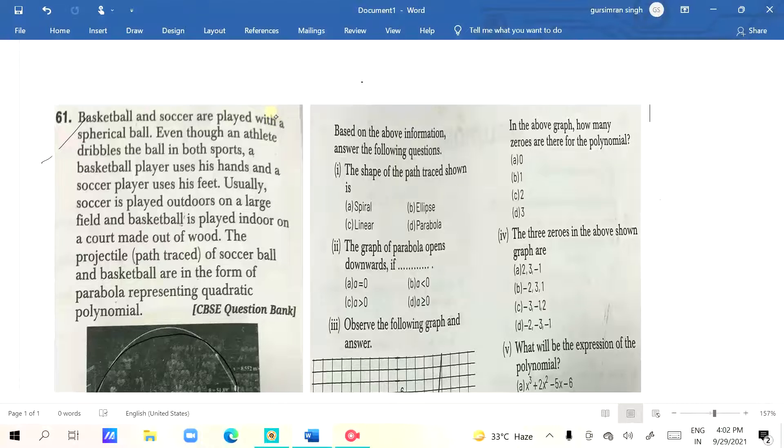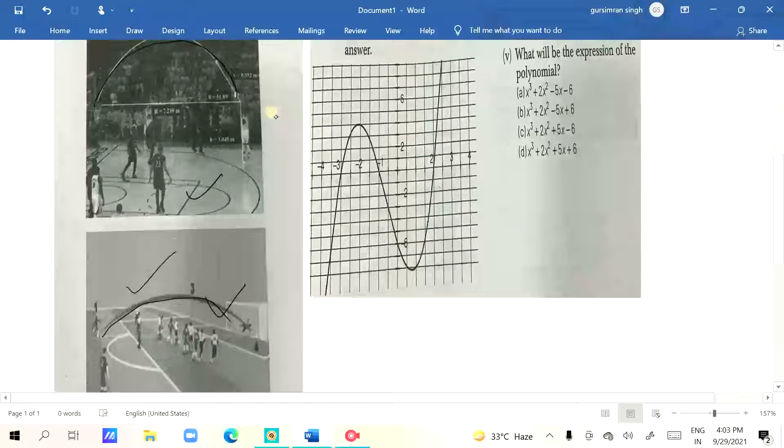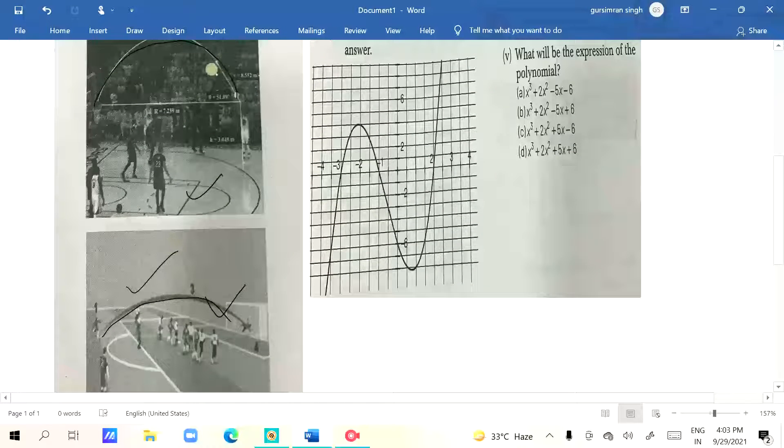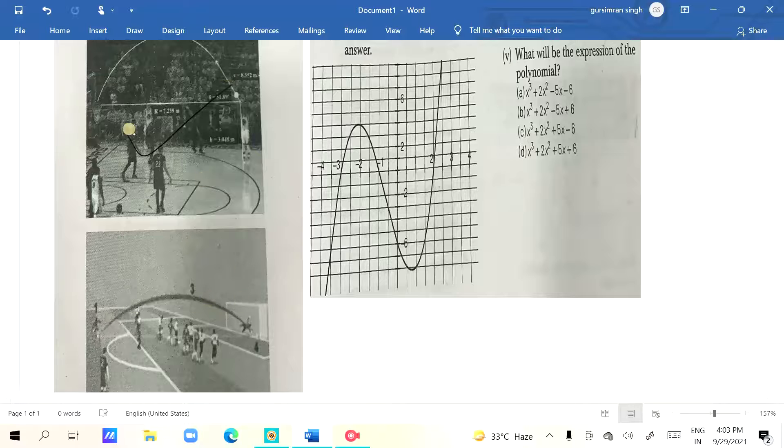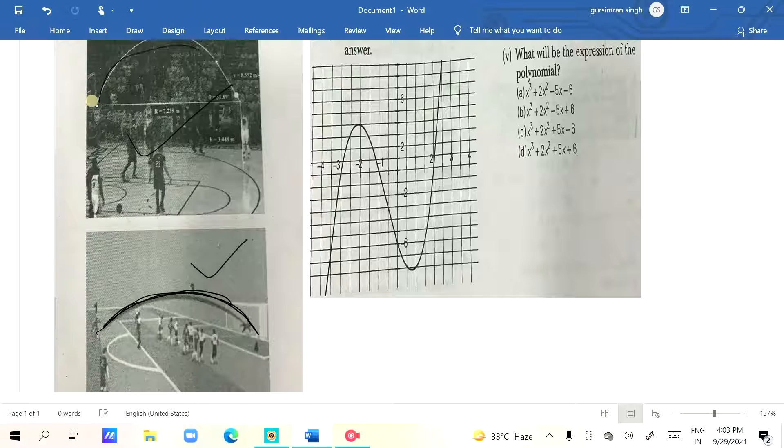Basketball and soccer players are playing with a spherical ball. In the starting point, there's a basketball court and a soccer court. This is our soccer court and basketball court. They say that the ball trajectory is like this.